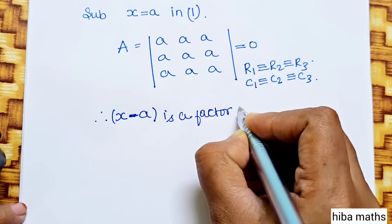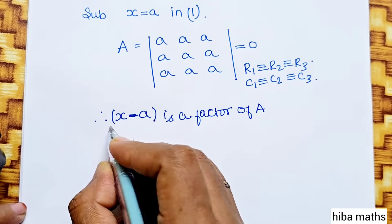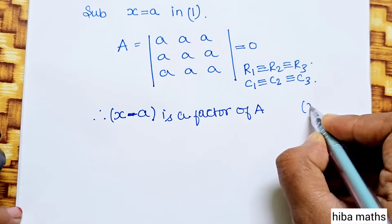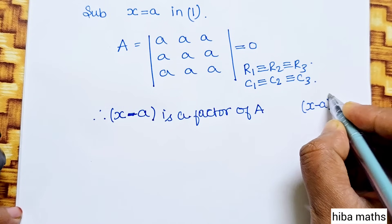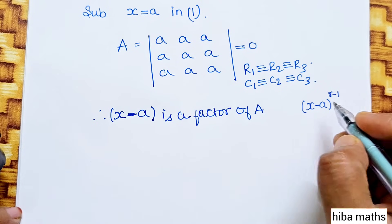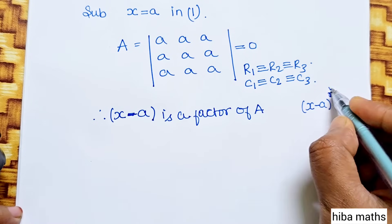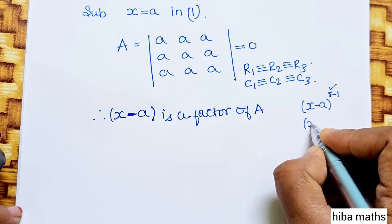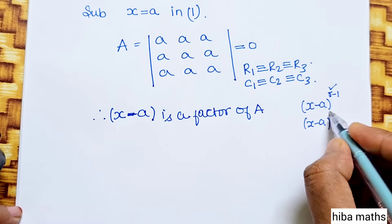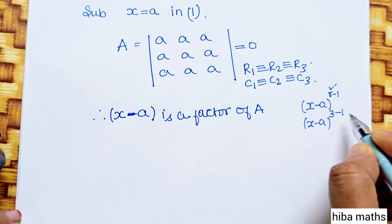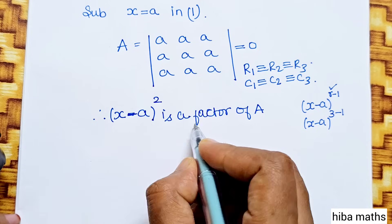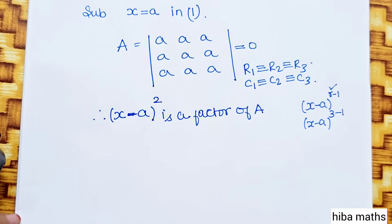It is a factor of A. Now, the degree of the determinant is 3 (an n×3 determinant). If (x minus a) is a factor with degree, then the power is 3 minus 1, which equals 2. Therefore, (x minus a) whole square is a factor of A.